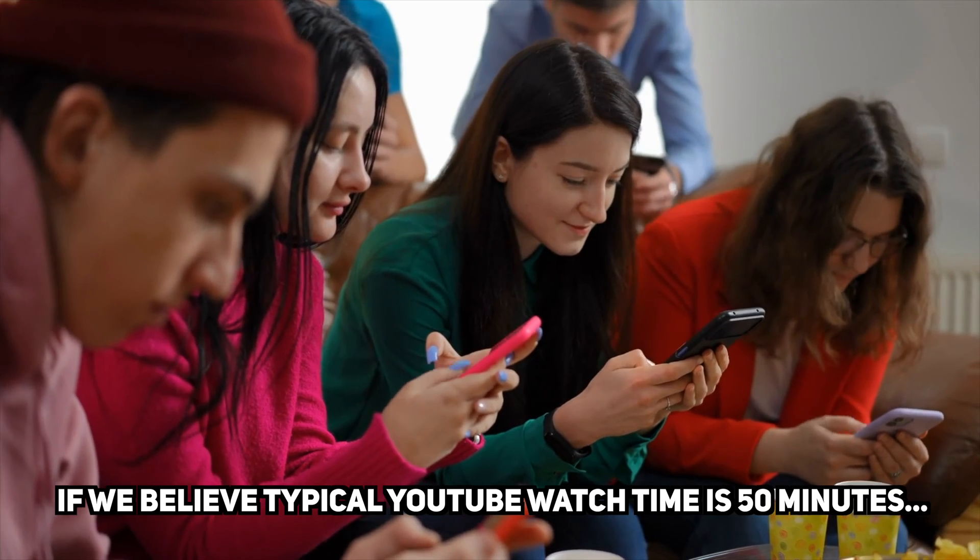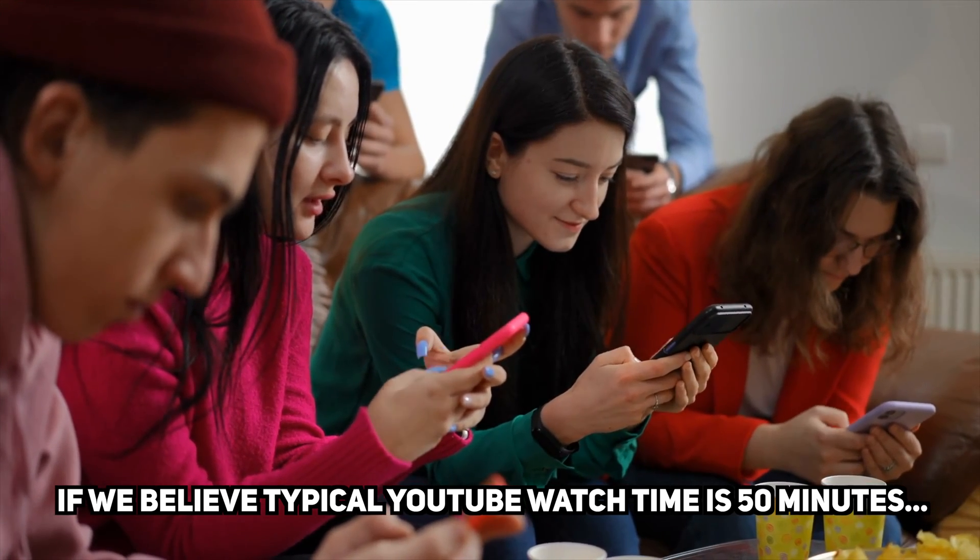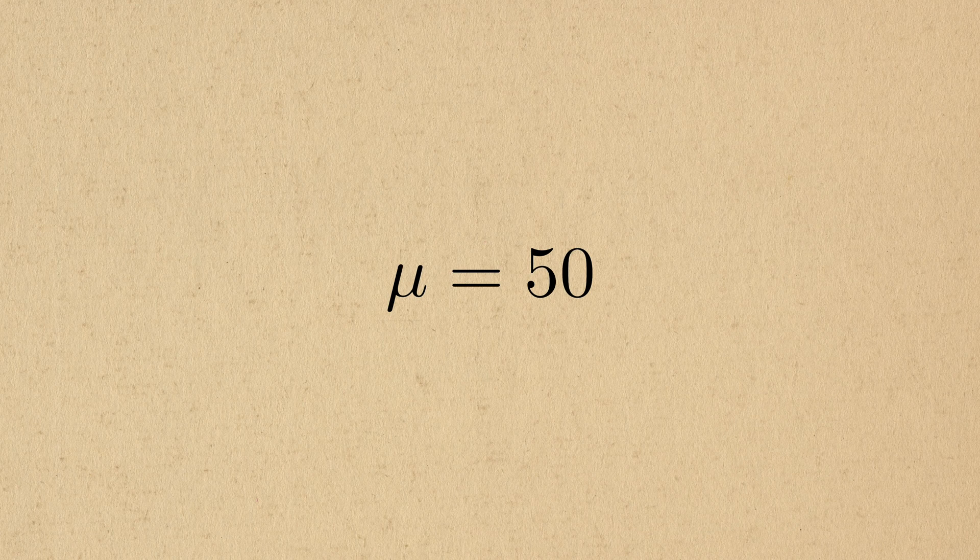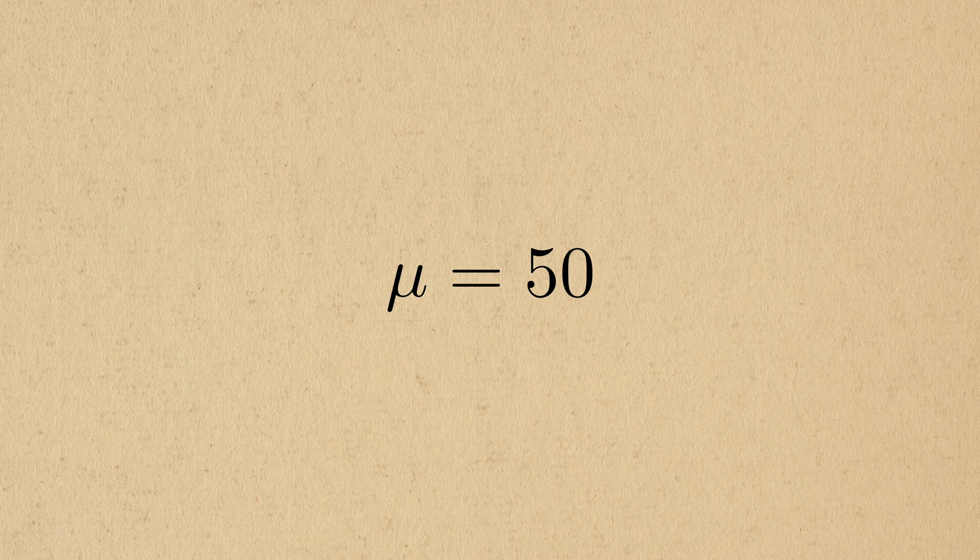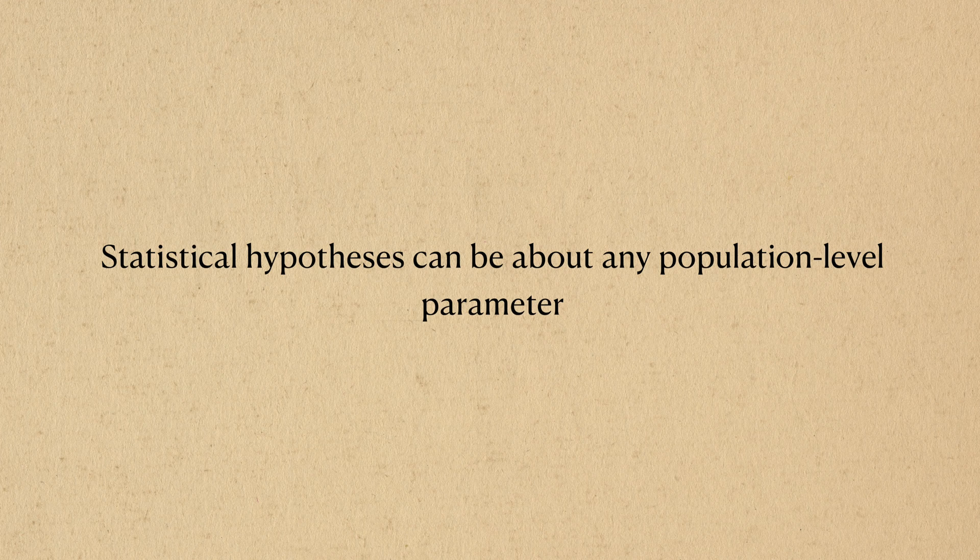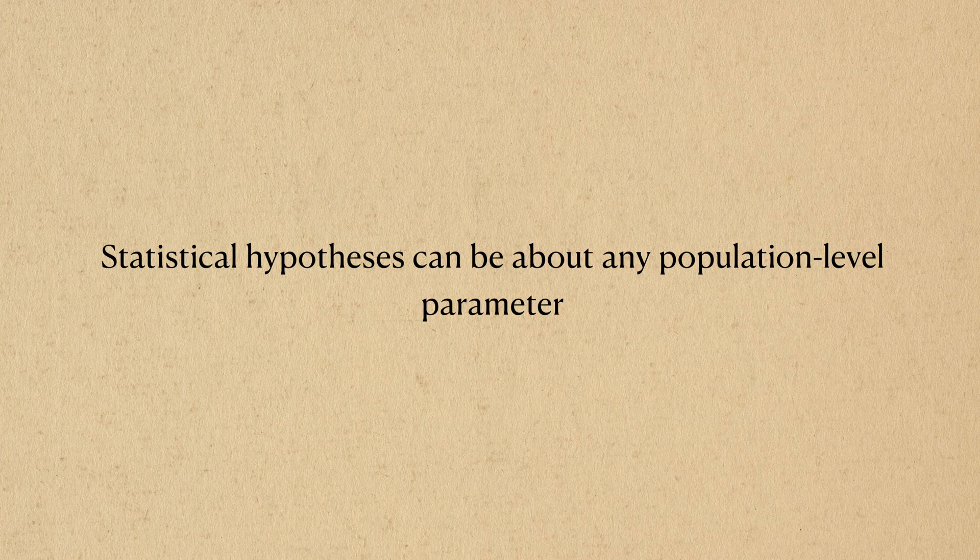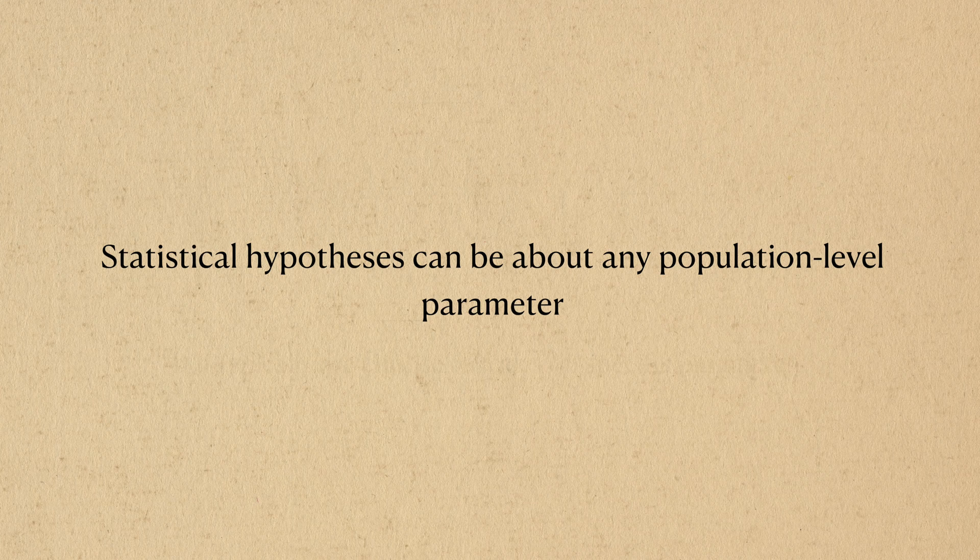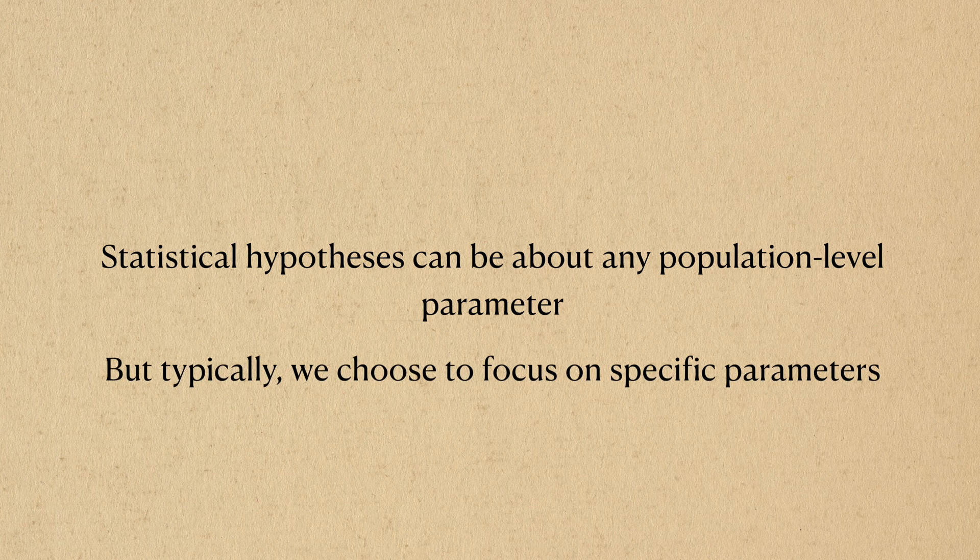For example, if we believe that the average video watch time of someone who watches YouTube is 50 minutes, then we translate this into a hypothesis about the population mean being equal to 50. Statistical hypotheses can be about any population level parameter, including the variance, but for this video we'll focus on the mean.